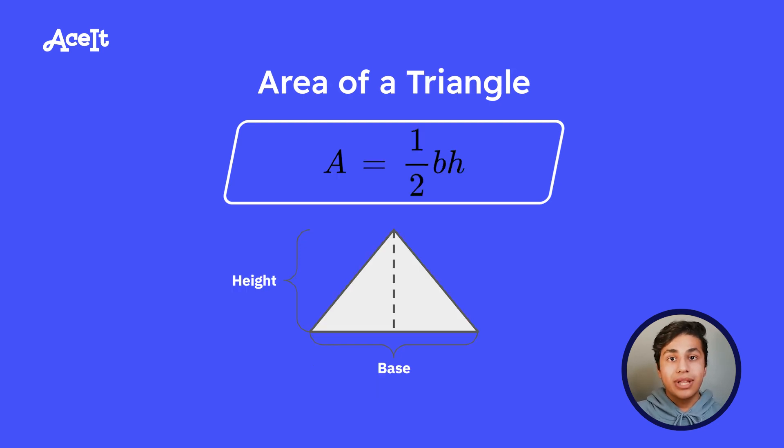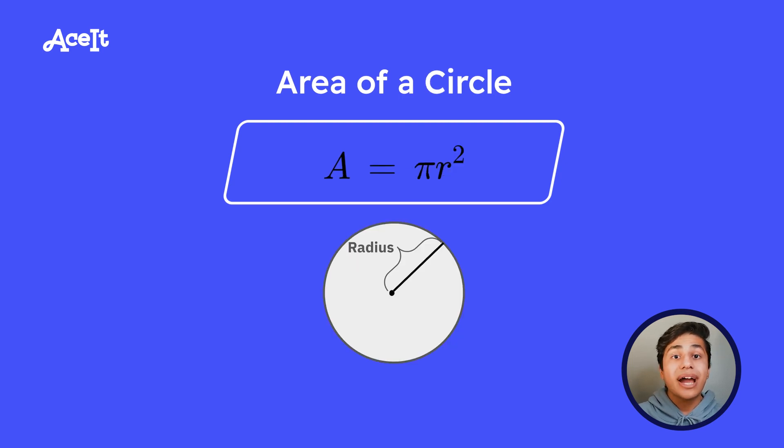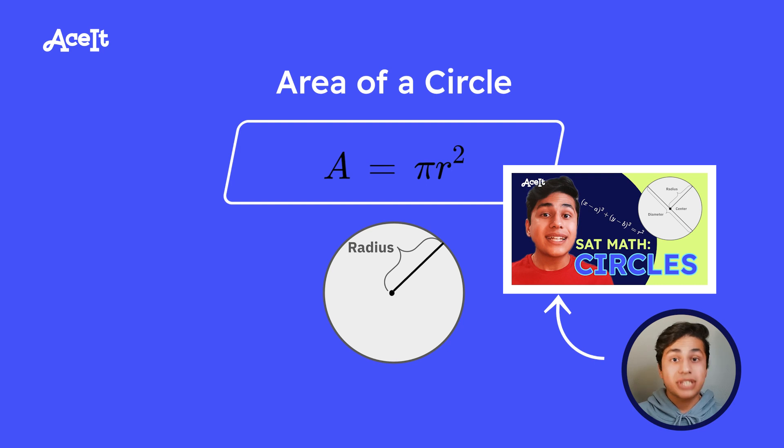Let's move on to the triangle. The area of a triangle is going to be one half times the triangle's base times its height. And if you don't know what base is, it's kind of what I have in the picture here. Finally, we have the area of the circle, which is pi r squared. If you want to learn more about circle formulas and what kinds of SAT math problems you can get with circles, check out the video we've made about it on our channel.